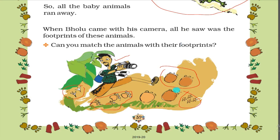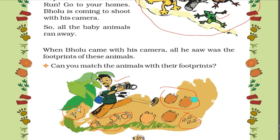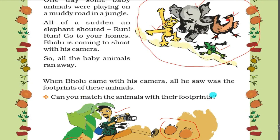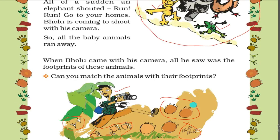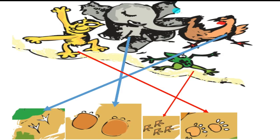So here we have seen footprints of animals and we have to match animals with footprints. In this picture you can see we have matched the footprints with the animals - tiger footprints, frog footprints, elephant footprints, and chicken footprints.